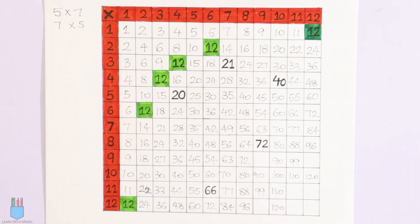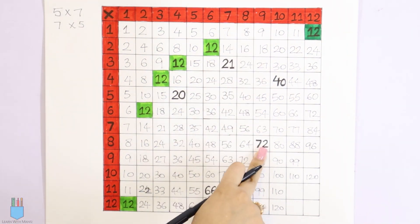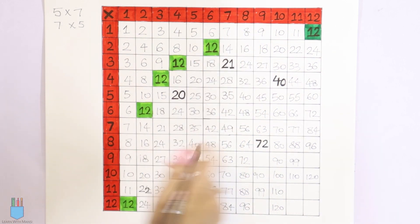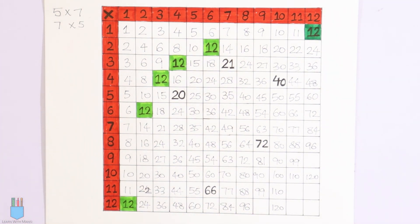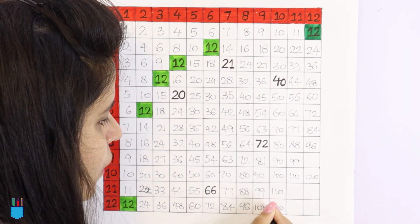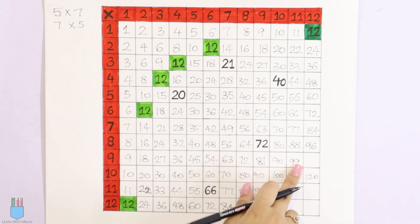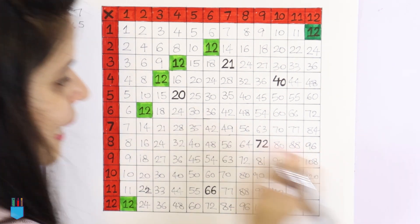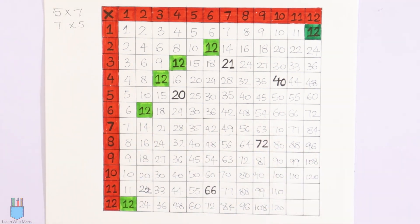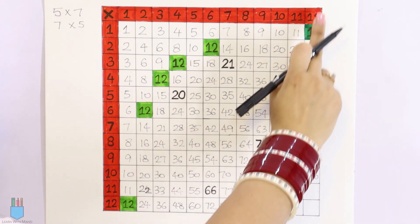Now moving to the 9 times table. The 9 times table is already filled up to 8, so now directly 9 into 9 is 81. Then last: 12 into 9 is 108. Similarly, here the 9 times table is filled up to 11, so the last remaining is 12 into 9, which is 108.